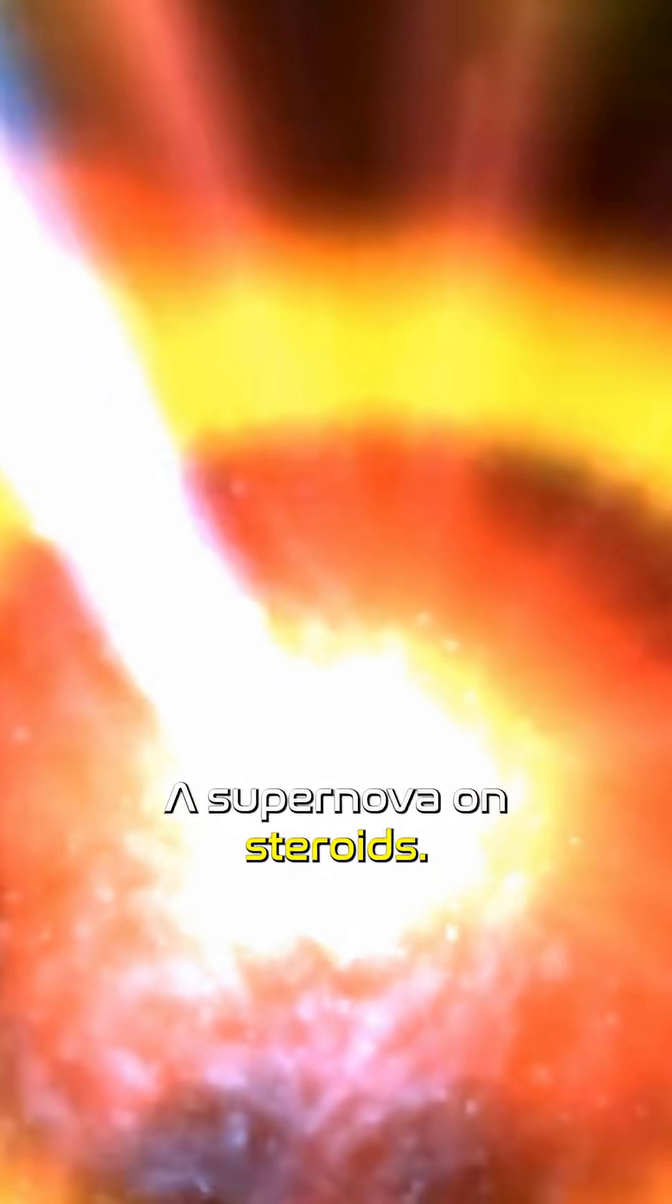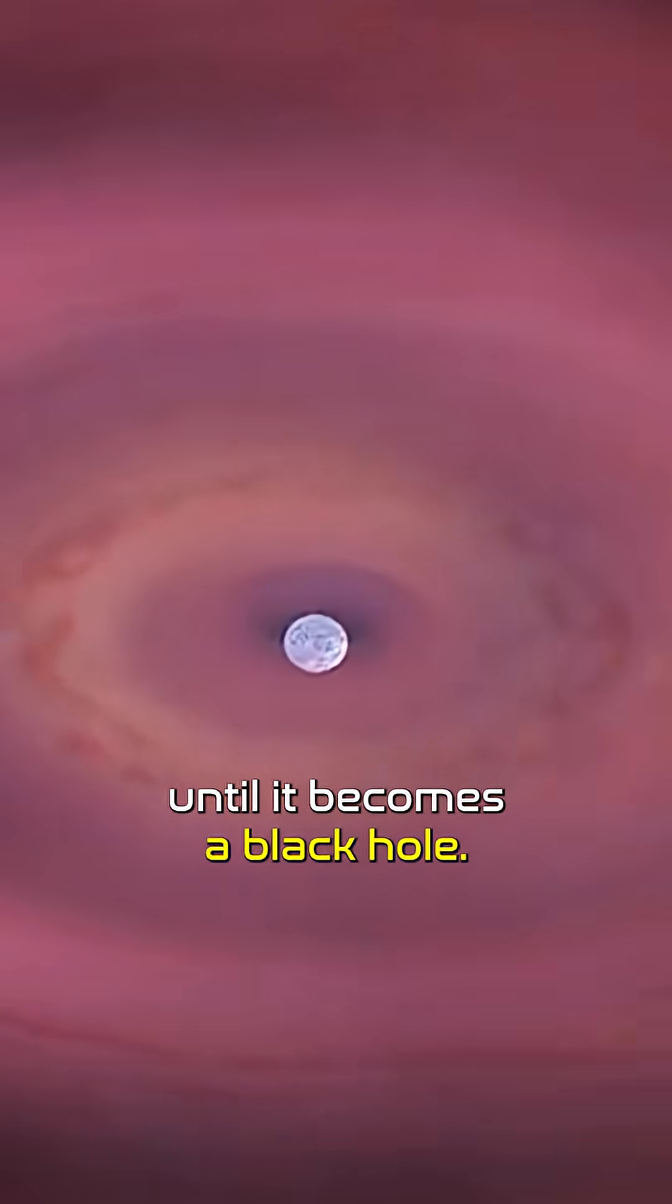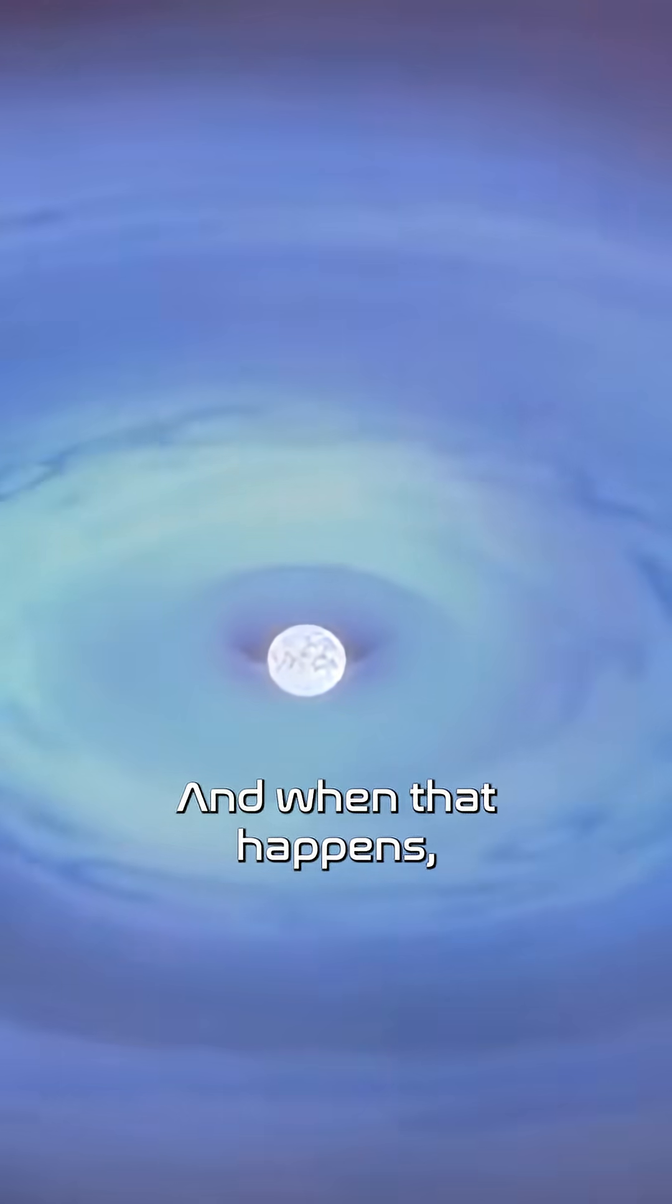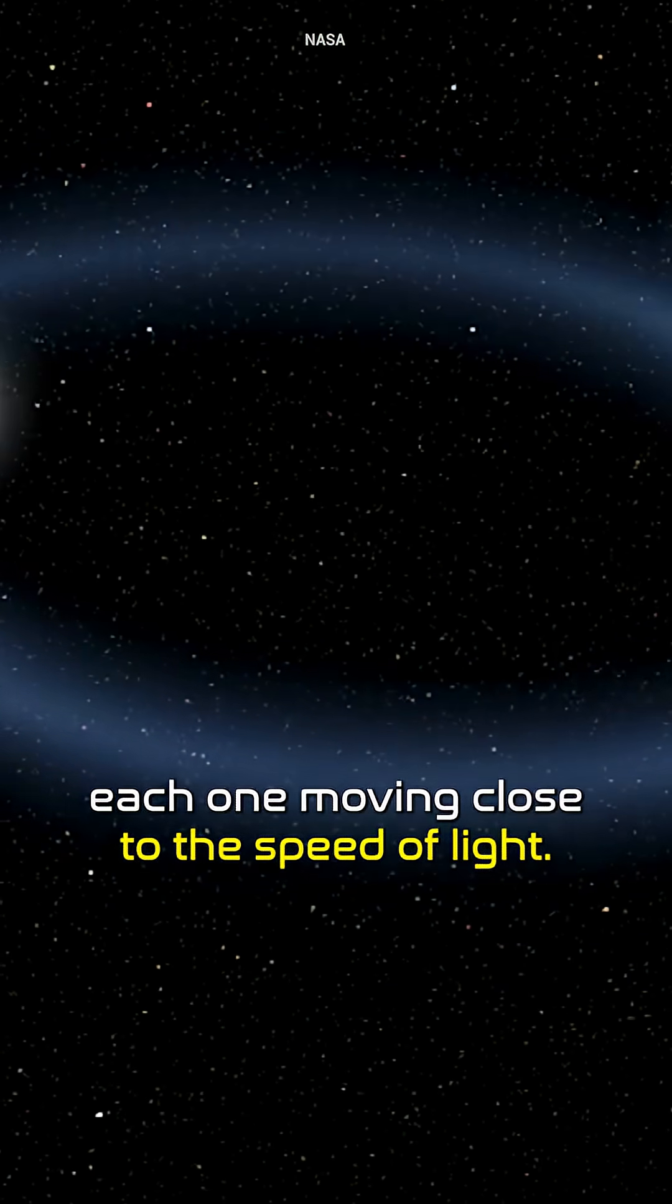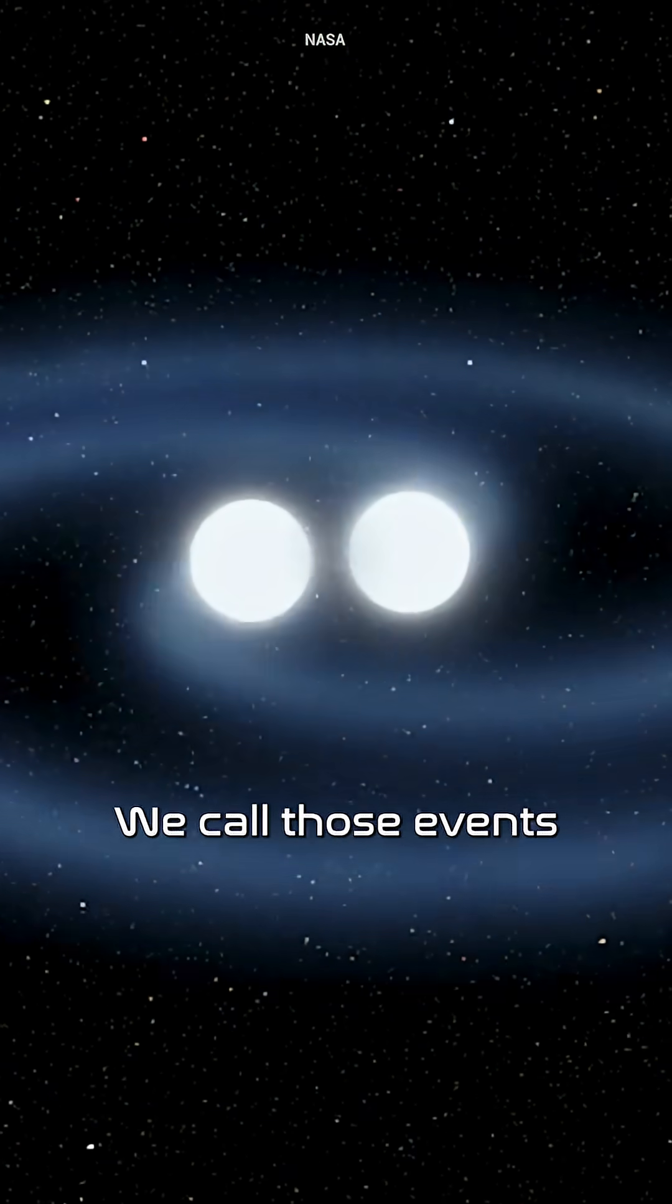Sometimes it's a hypernova, a supernova on steroids. The collapse keeps falling until it becomes a black hole. And when that happens, the newborn singularity spits out twin jets of radiation, each one moving close to the speed of light.